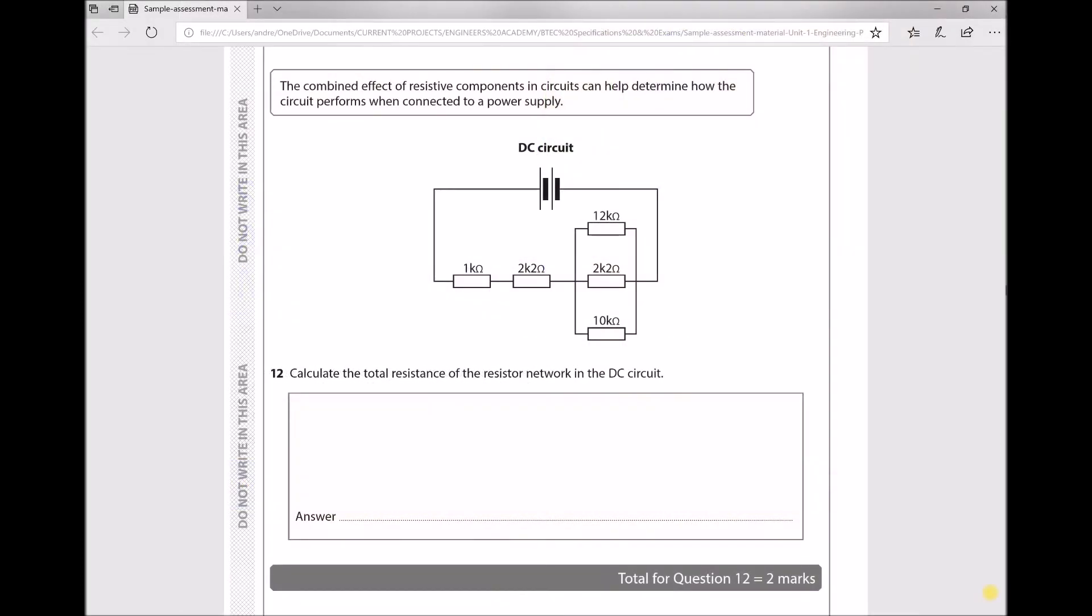Question 12 states the combined effect of resistive components in circuits can help determine how the circuit performs when connected to a power supply. We have a diagram with a combination of resistors in series and parallel, and then the question states: calculate the total resistance of the resistor network in the DC circuit.